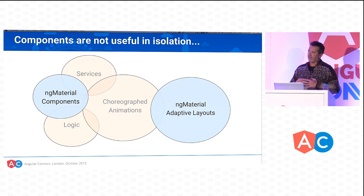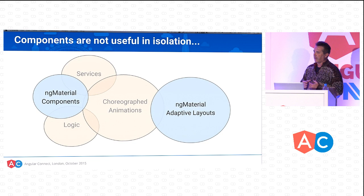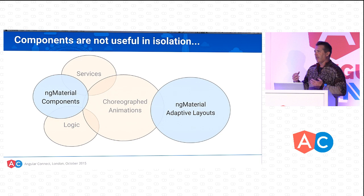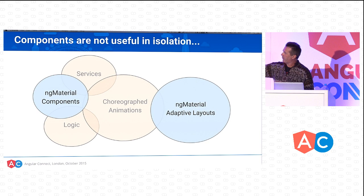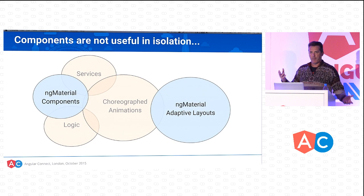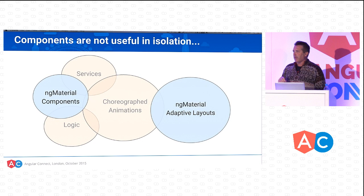What do I mean by validating and confirming 1.0? Components are not useful in isolation — you need to use them together in an application. To validate our release, we need to know that our components work well together in real-world applications, are easy to use, work as expected, and can be used in adaptive layouts. An application has Angular Material components, data services, logic, choreographed animations with ngAnimate, and more. Adaptive layouts are something that's going to become very important as we move forward with web apps.